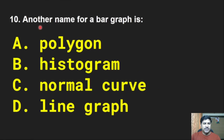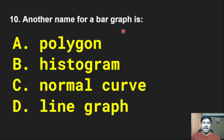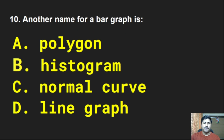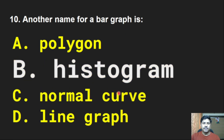Next question: Another name for a bar graph — polygon, histogram, normal curve, or line curve? The correct answer is option B, histogram. Another name for a bar graph is histogram.